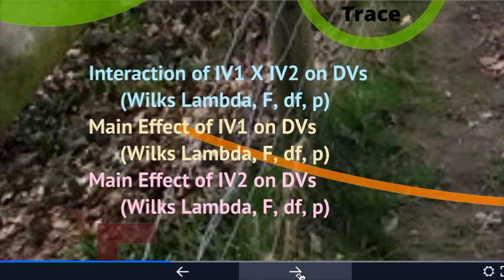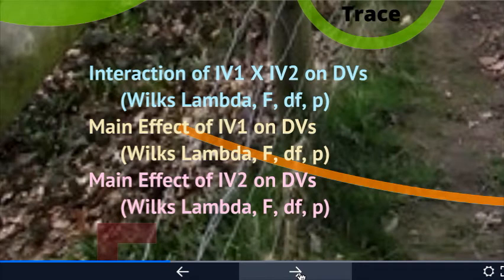So if you have a two-way MANOVA, you're actually going to be reporting three sets of MANOVA results — three Wilkes Lambdas. If you had three independent variables, you'd have many more: a three-way interaction, three two-way interactions, and three main effects. You'll find three-IV designs to be fairly rare in the literature because it gets so complex that people tend to move to more modeling traditions when dealing with that many variables.